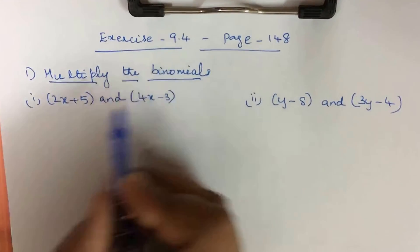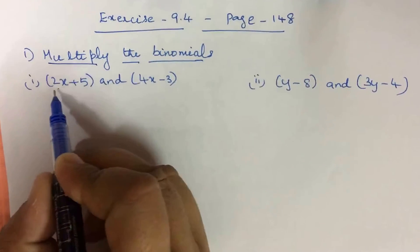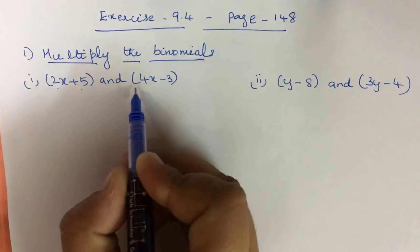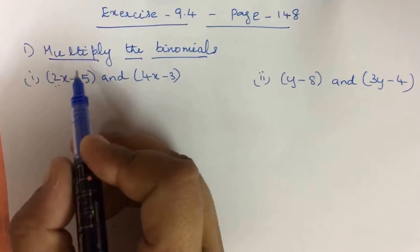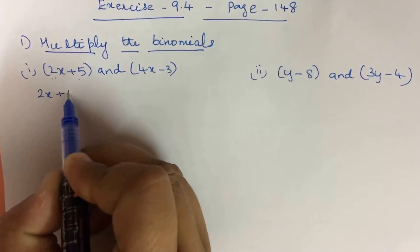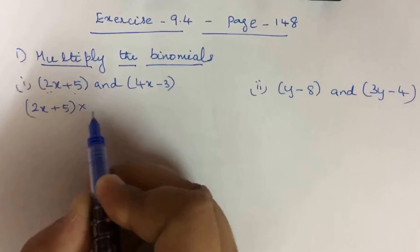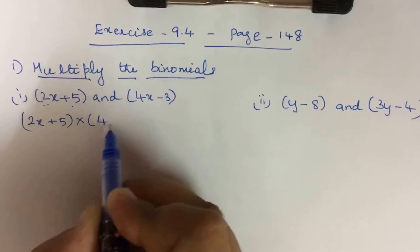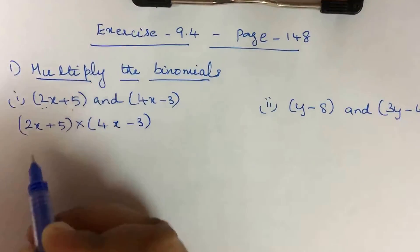Binomials are the ones which have two terms. So this is a binomial and this is another binomial. Multiplying two binomials will be (2x + 5) into (4x - 3).